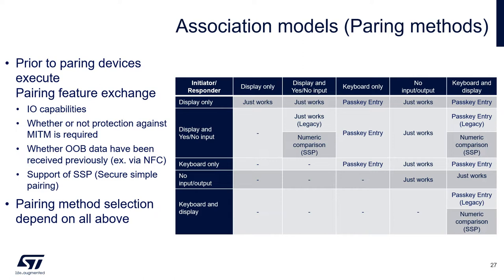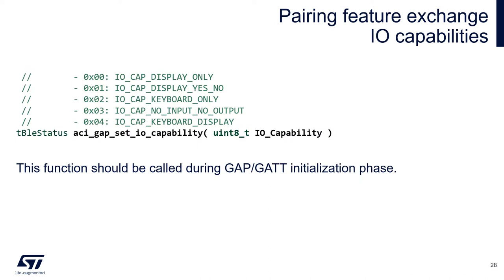Let's forget about out-of-band for a moment and assume we will use one of the other methods. On the right side in the table you see the selection algorithm based on the I/O capabilities for both initiator and responder. Assuming both devices support secure simple pairing and both have support for keyboard and display, we end up in the last column and last row, so numeric comparison will be chosen. Here you see the API that should be called from the user application to tell the BLE stack what I/O capabilities are available.